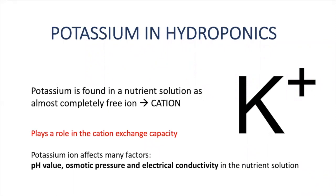Understanding how we use potassium in hydroponic fertilizers, we first need to know that potassium is a positively charged ion — meaning a cation — and plays a role in cation exchange capacity. Therefore, potassium levels can directly affect pH value, osmotic pressure, and electrical conductivity.